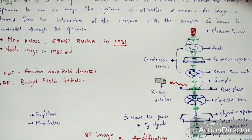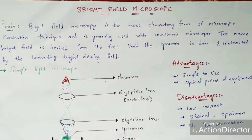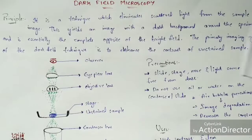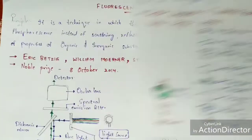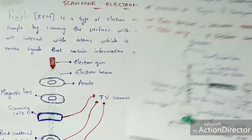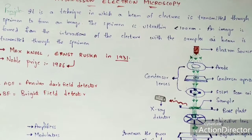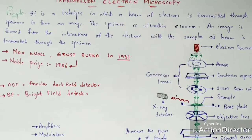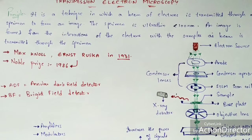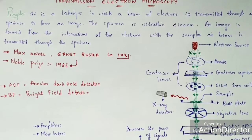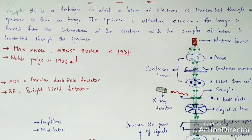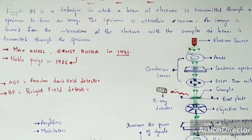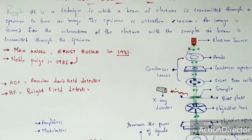This completes the discussion on transmission electron microscopy. In this channel, we have discussed bright field microscope, dark field microscope, phase contrast microscope, fluorescence microscope, scanning electron microscope, and transmission electron microscope. A playlist named 'Microscopy' is available in the channel, and links to each video are in the description box.